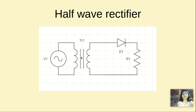TR1 is a transformer; we use transformers to step down the voltage. D1 is a diode — the PN junction diode — where this side is positive and this side is negative. This is the resistor R1. We use the resistor to take the output voltage.